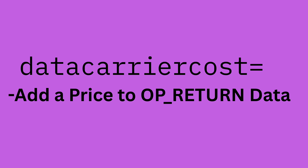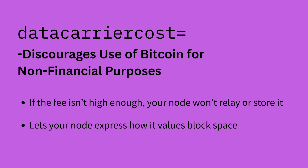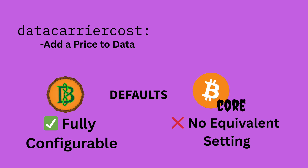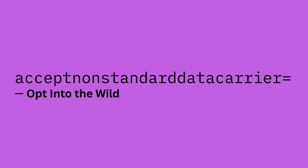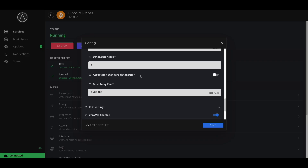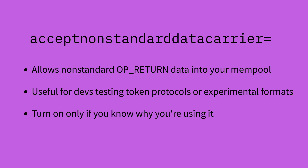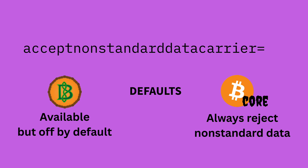Data carrier costs is a setting in Bitcoin Knots that lets you make storing data on-chain more expensive. It adds a fee multiplier to OP_RETURN data, so if someone wants to embed a message, file hash, or inscription, they have to pay more to get through your mempool. By raising this cost, your node treats each byte of data as heavier, which means data-heavy transactions need to pay a higher fee to be accepted or relayed. There is no equivalent setting in Core — Knots puts that choice in your hands. Accept non-standard data carrier: if you're experimenting with token protocols, custom OP_RETURN formats, or other non-standard uses of Bitcoin, this setting lets your node accept and relay that data. It's turned off by default, and for good reason — these transaction types can open the door to more spam and bloat. You should only turn this on if you know what you're doing and have a specific reason to support experimental or non-monetary use cases.